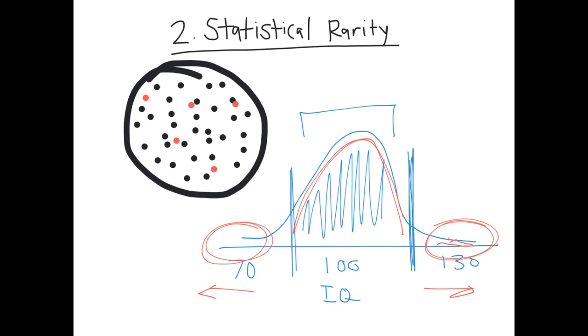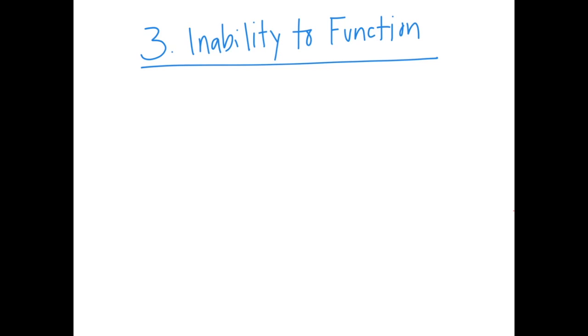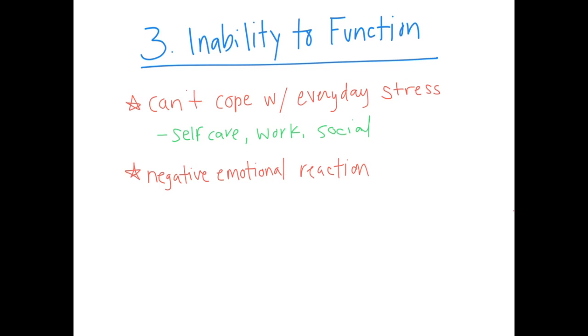The third criterion in this list is the inability to function. So this is when our behavior becomes so disruptive that we aren't able to cope with or manage the everyday demands of life or the everyday stressors that we come into contact with. This includes things like self-care, like brushing your teeth, going to bed, getting dressed, work, and social interactions. It's typically accompanied with a negative emotional reaction that is self-focused, things like self-harm or cutting, anxiety or irrational fears. Also OCD could be included in that.